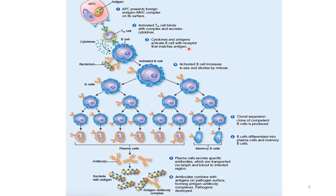At step number 4, the activated B-cells differentiate into two groups: plasma cells and memory B-cells. Plasma cells are short-lived effector cells that secrete antibodies, which circulate via our lymph and blood to the infected region. Once encountered with the same bacteria that activated the system earlier, the antibodies bind with the antigen on the pathogen surface, forming an antigen-antibody complex, and the pathogen will be destroyed.